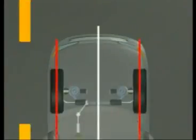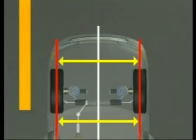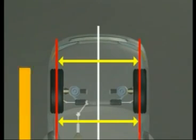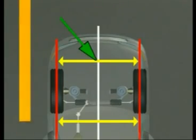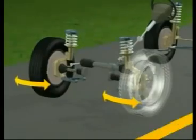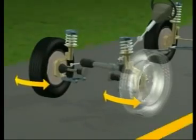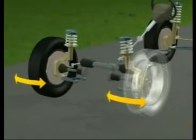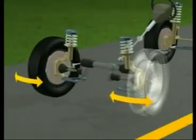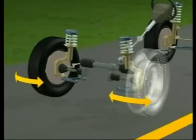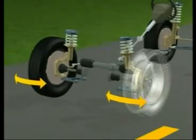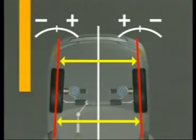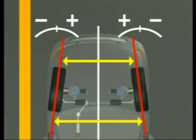Toe is an angle formed by a line drawn through the horizontal center of each wheel relative to the center line of the vehicle. Correct toe angle in or out will reduce scuff and improve tire life by reducing running toe to an average near zero.